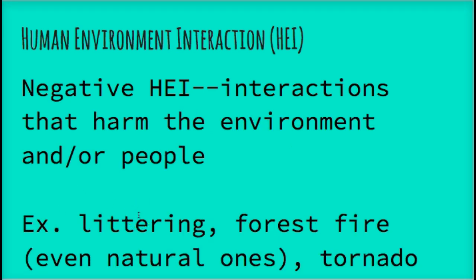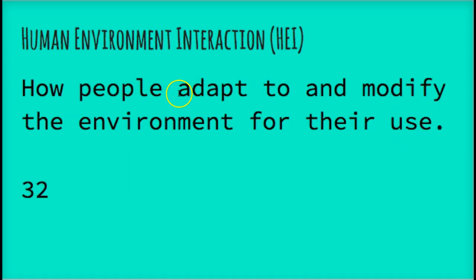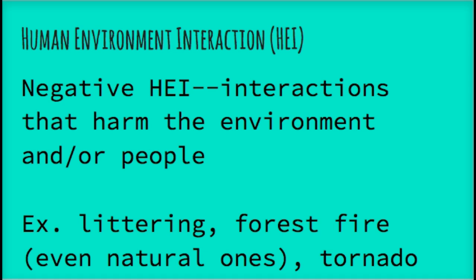Negative HEI are interactions that harm the environment and/or the people. Examples include littering, forest fires even natural ones if homes are there, tornadoes, hurricanes, earthquakes. People have to adapt to these negative interactions — we create tornado drills in school, and drones that help during natural disasters are an adaptation to surviving natural forces. Living in any kind of shelter — an igloo, a house, a tent for camping — those are all adaptations we make to survive.